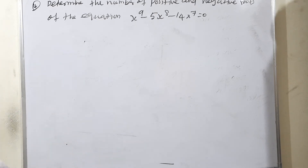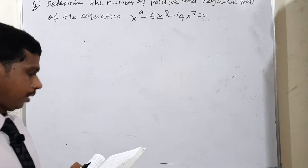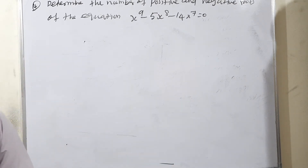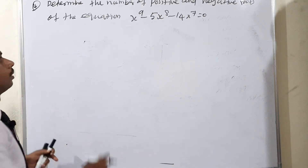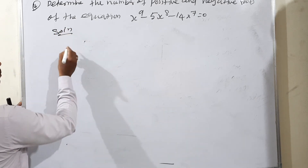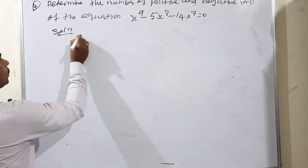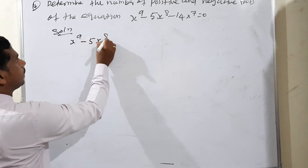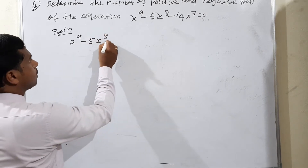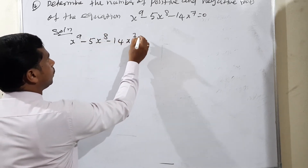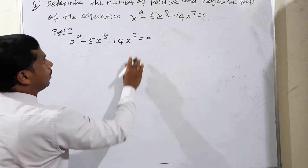Minus 14 x to the power 7 is equal to 0. Here is the equation. Solution: x to the power 9 minus 5 x to the power 8 minus 14 x to the power 7 is equal to 0.